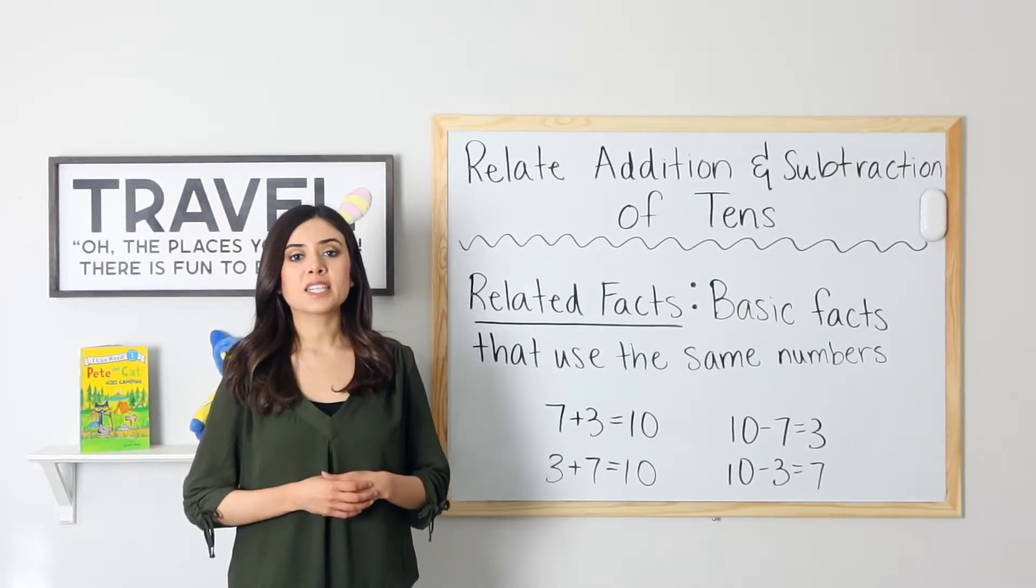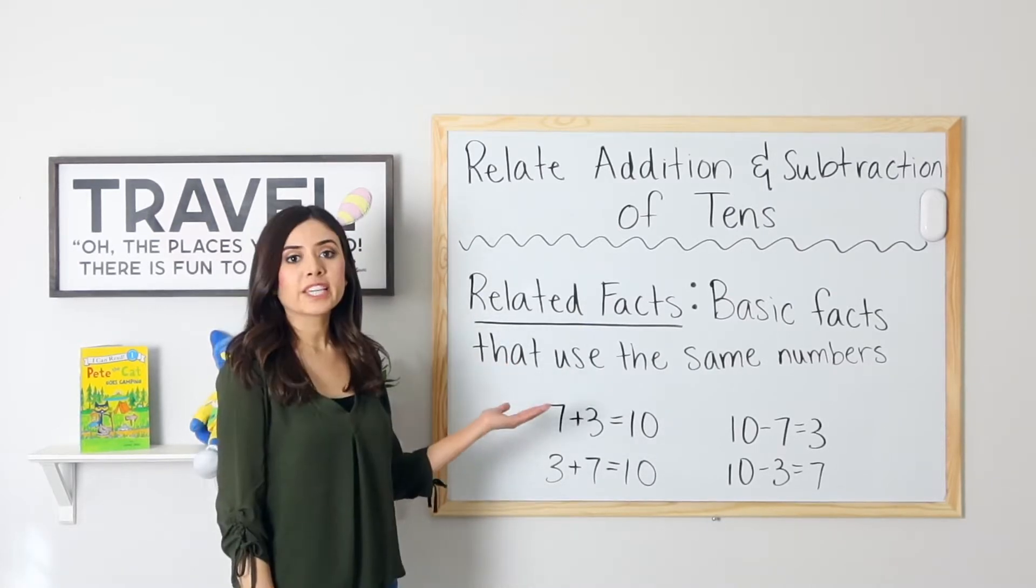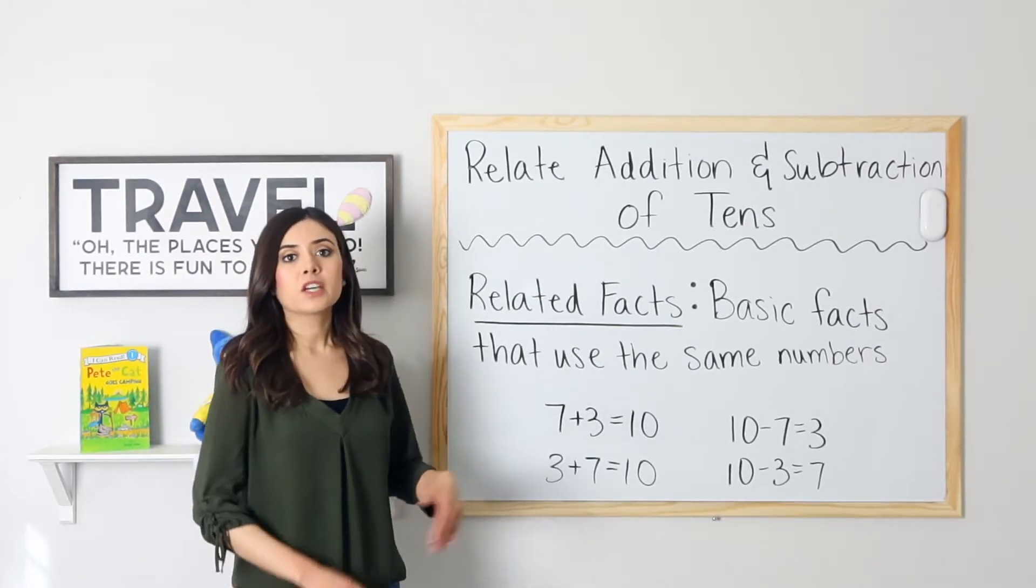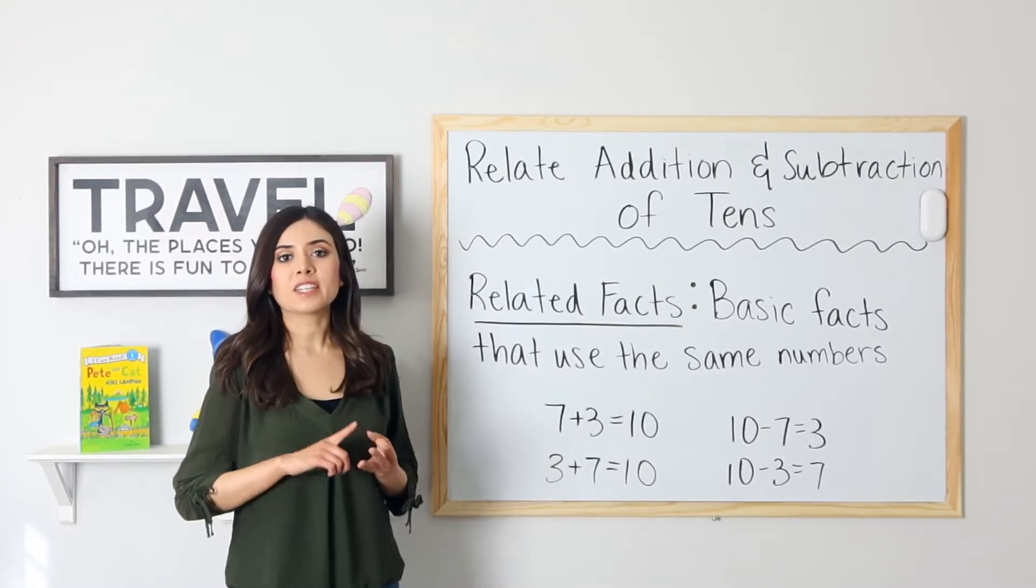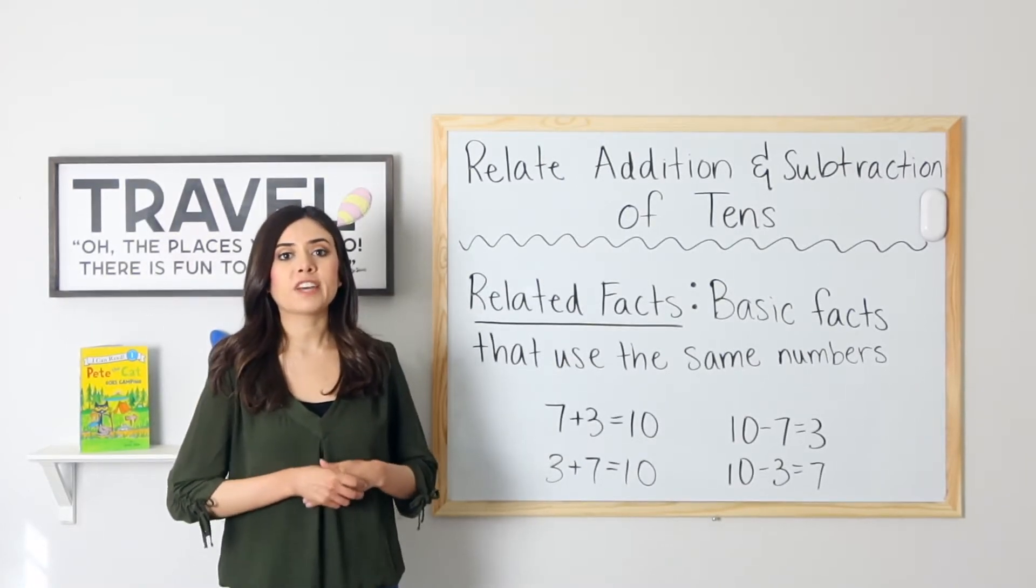Before I get into the lesson, let's remember what related facts are. Related facts are basic facts that use the same numbers. For example, I have 3, 7, and 10. I can use these three numbers to make different facts.